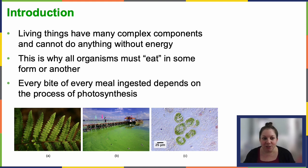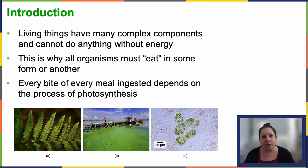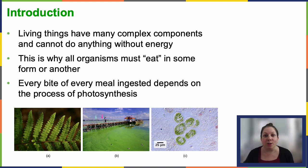So, we've got a picture of a couple of plants or photosynthetic organisms, depending on the image. Our first one looks like a fern. Then we have some algae out in an ocean, and then some bacteria — sometimes we call them cyanobacteria; they used to be called blue-green algae — but they are actually bacteria that are all photoautotrophs. They carry out photosynthesis. So, we're going to be looking at how this process works.